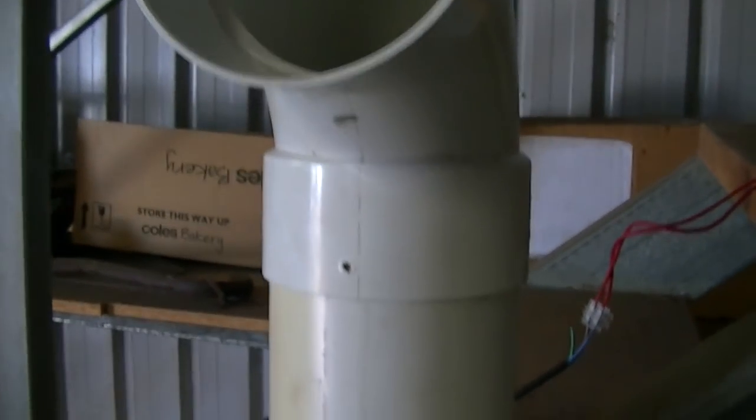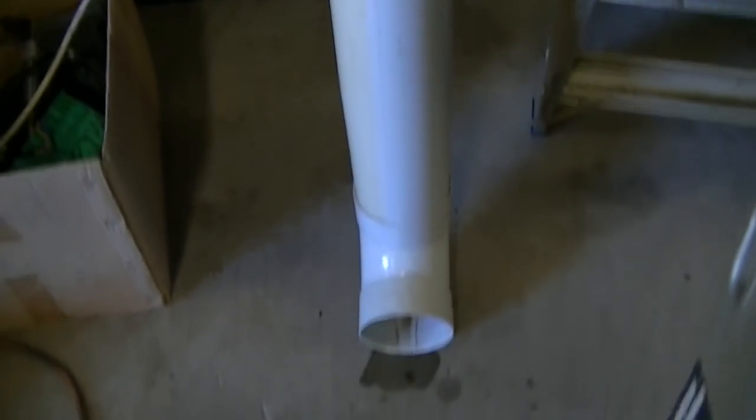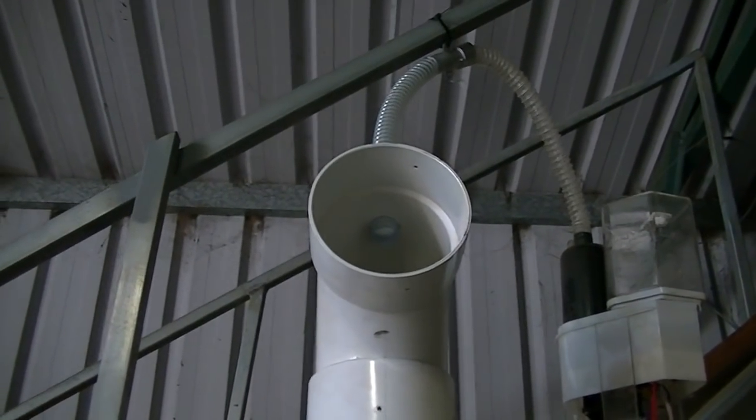So the theory is, the fog cools the air in the tube, and that air becomes heavier because it becomes more dense and flows out the bottom. So once it gets going, it draws air in from the top.